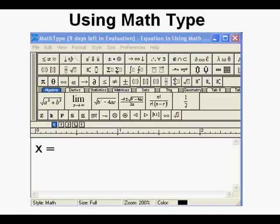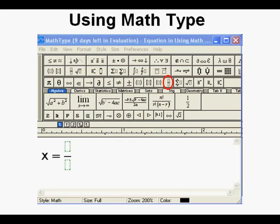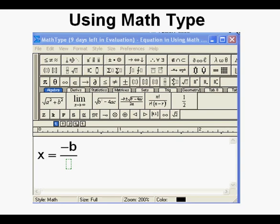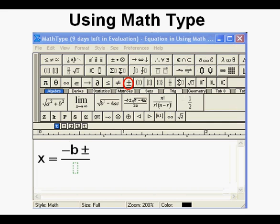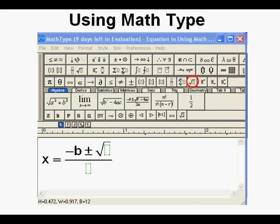We enter X first, then the equal sign. Then we enter the fraction symbol found here on the palette. Then we enter the negative B from the formula in the numerator. Next we enter the plus or minus symbol from the palette. Then we enter the square root symbol from the palette. Next we enter the B.